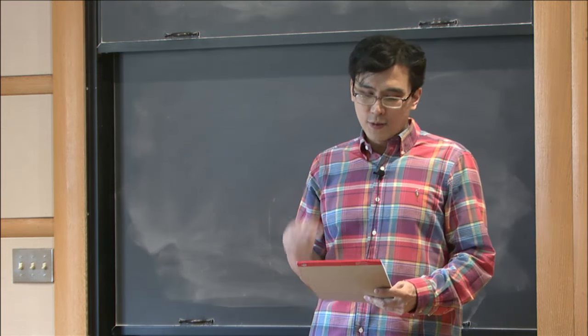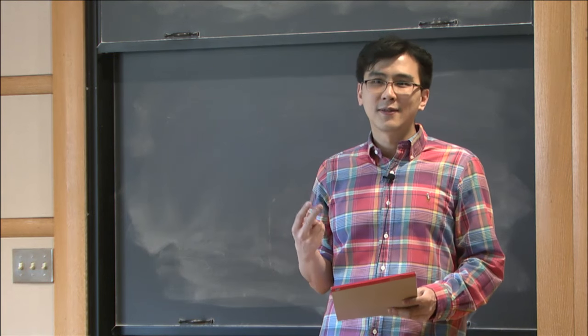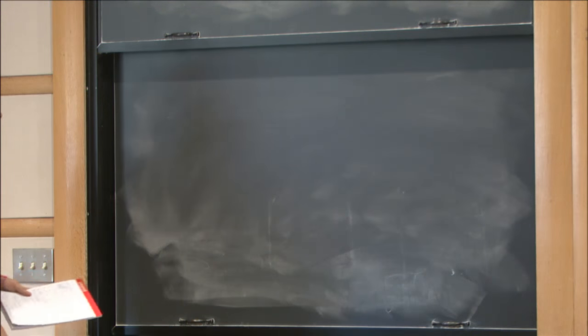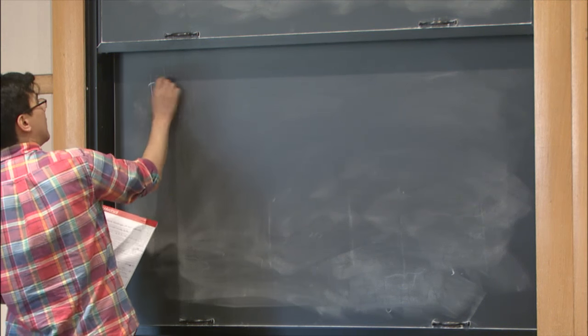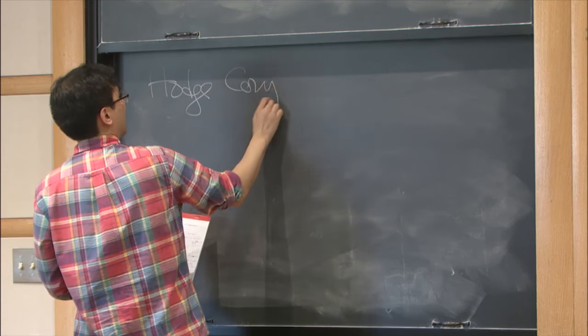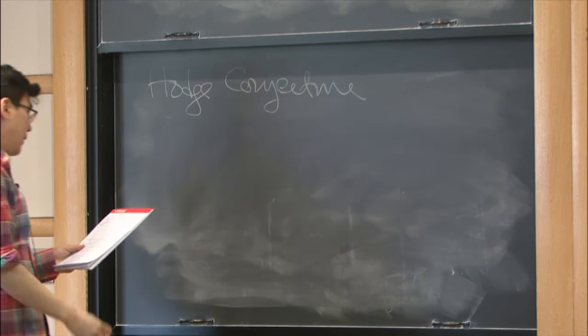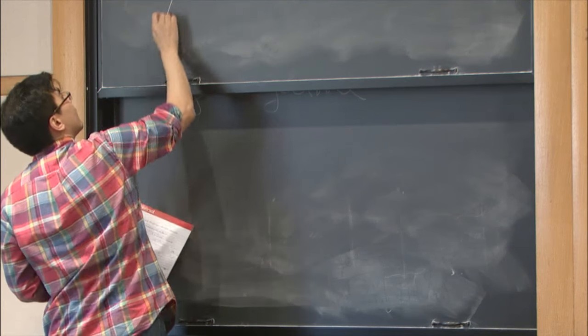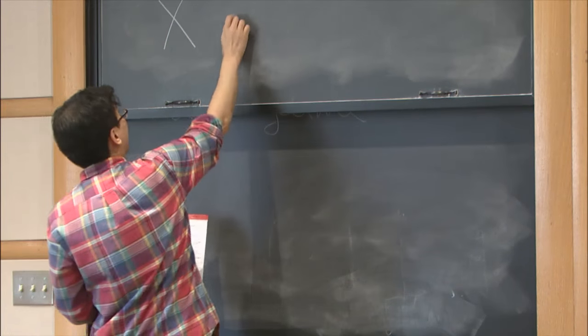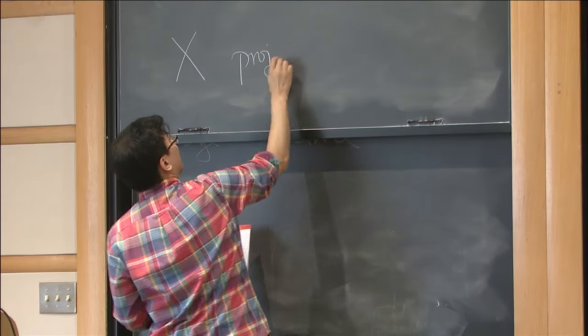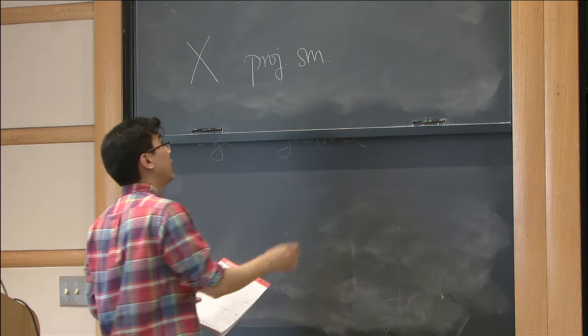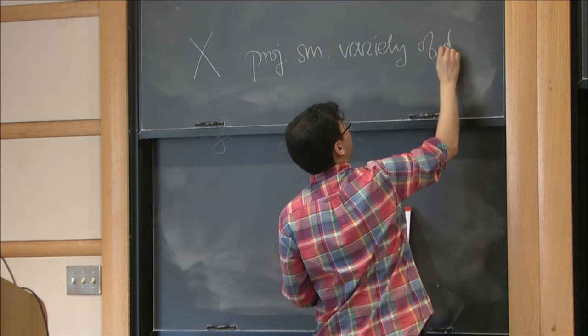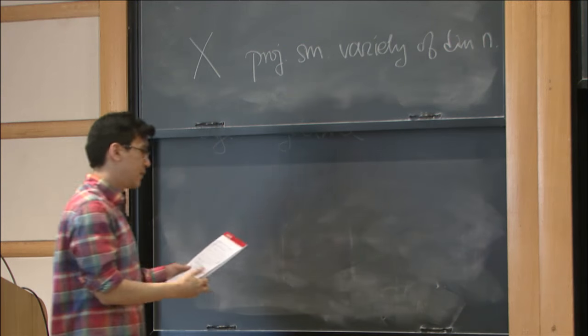Let me try to remind you of two kinds of standard conjectures on algebraic cycles. So let me start with the Hodge conjecture. Throughout today, X is going to be a projective smooth variety, a variety of dimension N, often over the complex numbers.